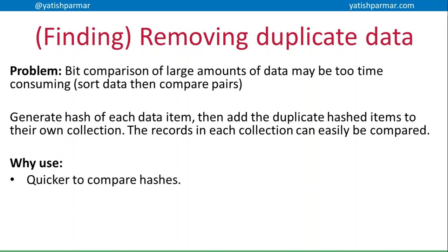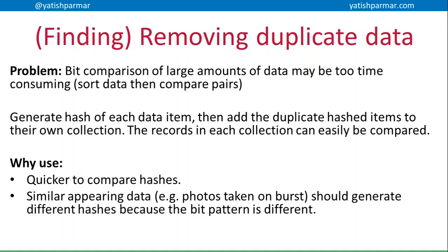Why is it quicker? It's much quicker to compare a hash than it is to compare an input file. If we're trying to compare duplicate images, you might have millions of bits in a file, but the generated hashes might only be a few bytes in size and are much quicker to compare. The other advantage is to do with generating very different hashes based upon similar input — because the actual bit pattern within a file will be very, very different even if it looks the same to us. For example, photos taken in burst mode may look similar but have different bit patterns, so their hashes will differ and they won't be marked as duplicates.